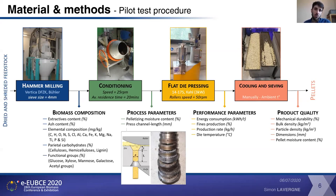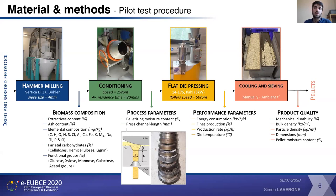We measured the performance parameters: energy consumption, fine production, temperature, and also the production rates. And we controlled the product quality: mechanical durability, bulk density, as well as the dimension and the moisture. Durability is a very important parameter during pelletizing — mechanical durability is the amount of material that is strong enough. So the goal is to have the maximum of pellets durable, expressed in percentage. The second important parameter is of course the bulk density.